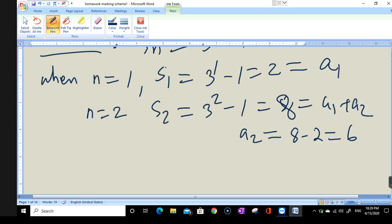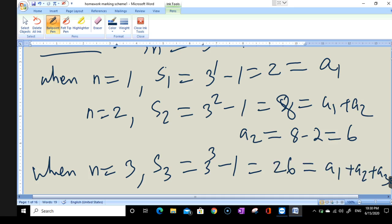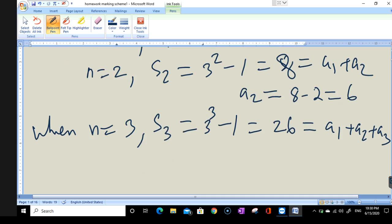When n = 3, we have S3 = 3^3 - 1 = 27 - 1 = 26, and this equals a1 + a2 + a3. But I know a1 + a2 = 8, so a3 is 26 - 8 = 18.